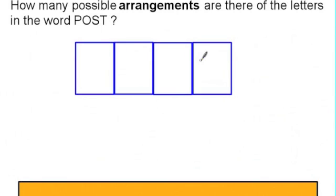So usually we work from left to right. In the first box we haven't used any letters so we have four letters to choose from. Now we've used one of the letters, we have three remaining for the second.